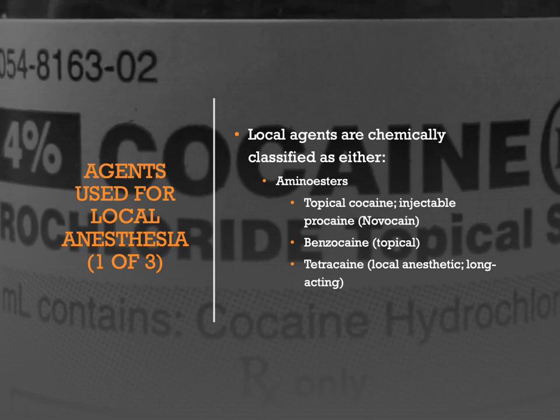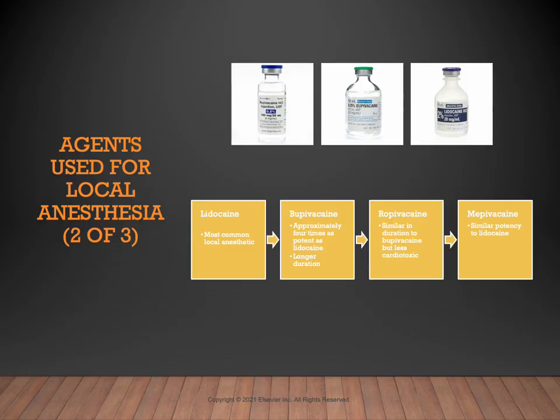Amino amides are another category of local anesthetic. Examples include lidocaine, bupivacaine, ropivacaine, and mepivacaine. The most common in surgery are lidocaine, bupivacaine, and ropivacaine. Mepivacaine is used less frequently. Lidocaine and bupivacaine are commonly combined with dilute epinephrine — a vasoconstrictor that slows absorption of the local anesthetic into the bloodstream, keeping it at the surgical site longer. Local anesthetics without epinephrine may have a blue label, while those with epinephrine have a red label.